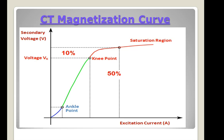In conclusion, understanding current transformer fundamentals and basics is very important for the proper selection of protection and measuring CTs. Current transformer core material, accuracy class, CT burden, and CT magnetization curve are all equally important to know. This knowledge will help engineers design power system networks and select the proper current transformers.